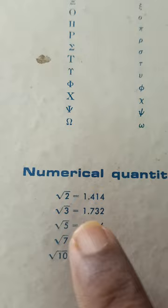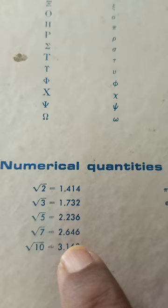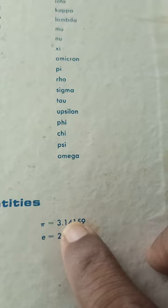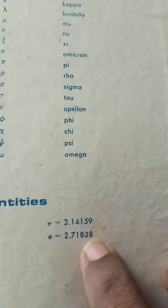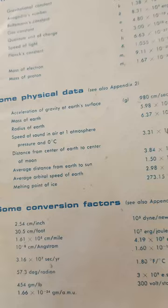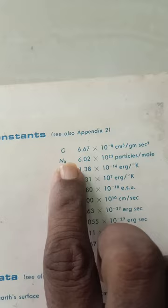In the first part of the book there are some Greek alphabets written, as well as some numerical quantities like the square root of 2 is given as 1.414, square root of 3 as 1.732, which are required for elementary physics. On the right side, the value of pi is given as 3.14159, a special value of 2.718, and some physical constants and conversion factors.